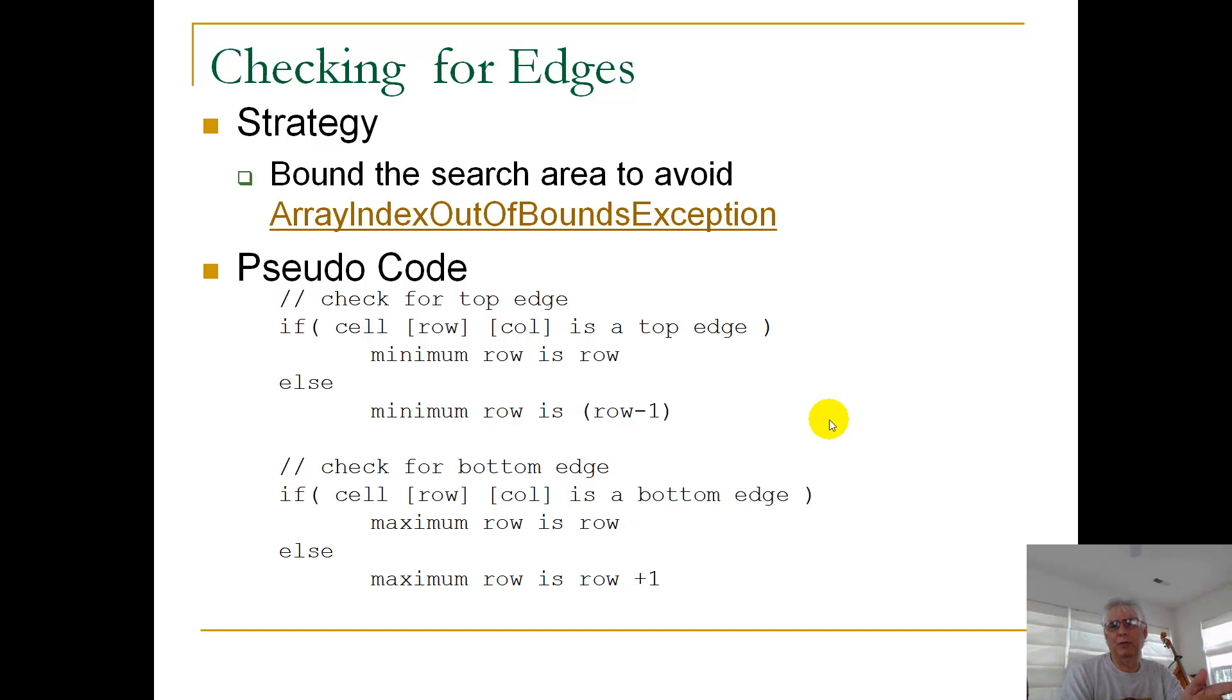So our strategy is we're going to bound the search area, or bound the check area, the area we're going to check, and we want to avoid the dreaded array index out of bounds exception.